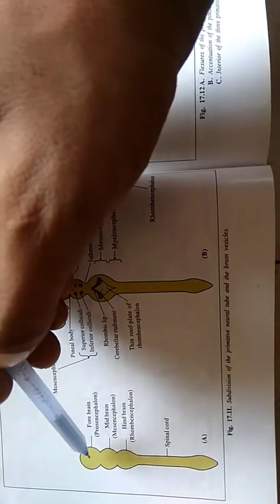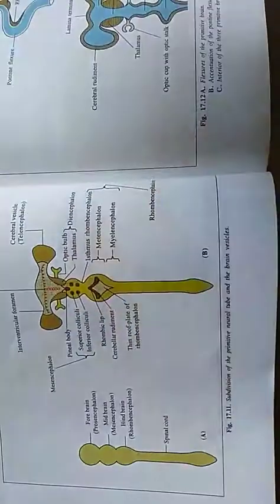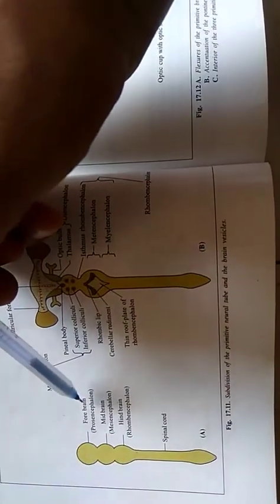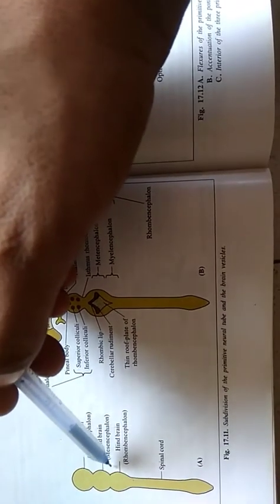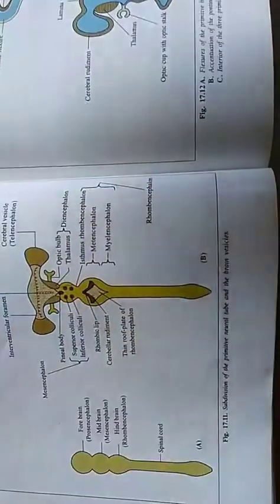This cephalic part of neural tube shows three dilatations known as brain vesicles. These are forebrain vesicle or prosencephalon, midbrain vesicle or mesencephalon, and hindbrain vesicle or rhombencephalon. These three vesicles are separated by two circular constrictions.